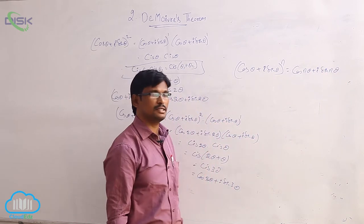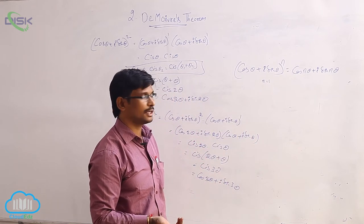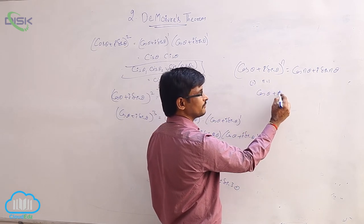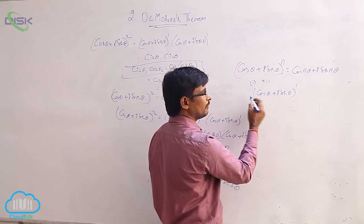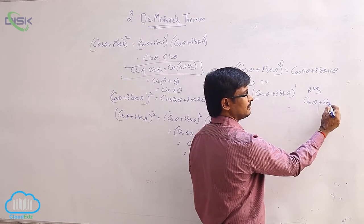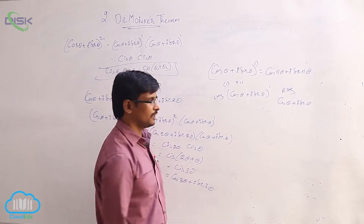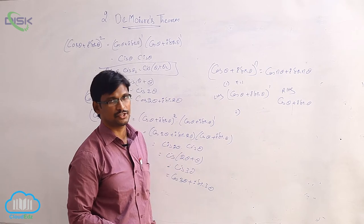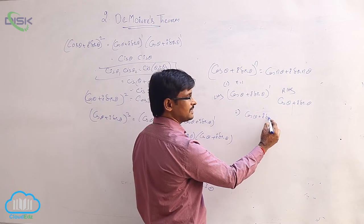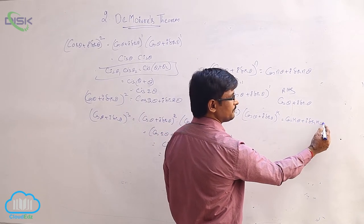This theorem can be proved using induction on n. The induction steps are: n equal to 1, n equal to k, and n equal to k plus 1. First case — take n equal to 1. LHS is cos theta plus i sine theta whole power 1, and RHS is cos 1 theta plus i sine 1 theta. Observe that LHS equals RHS, so it is true for n equal to 1. Second case: assume for n equal to k it is true — that is, cos theta plus i sine theta whole power k equals cos k theta plus i sine k theta. Call this equation 1.